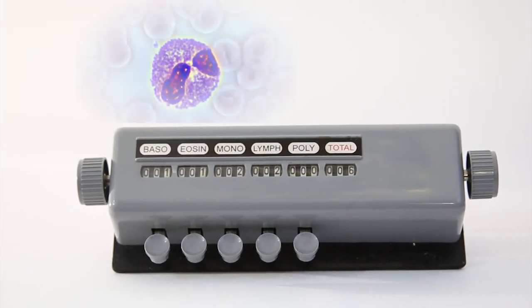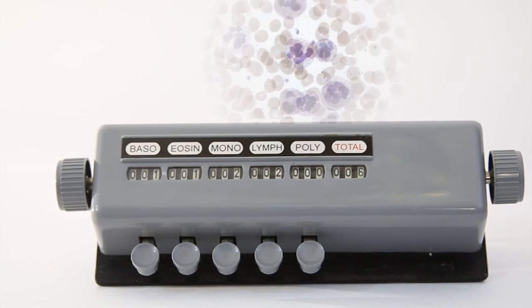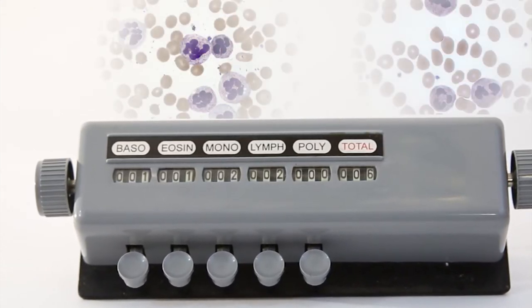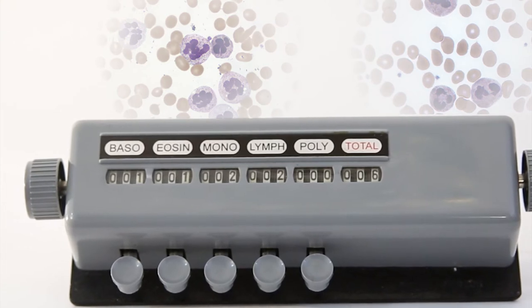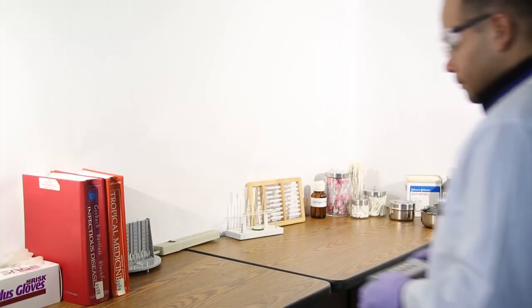Basophils, eosinophils, monocytes, lymphocytes, band neutrophils, and segmented neutrophils. The band and segmented neutrophils are counted together under the shared button of poly. Keep a mental note of how many bands make up the total.